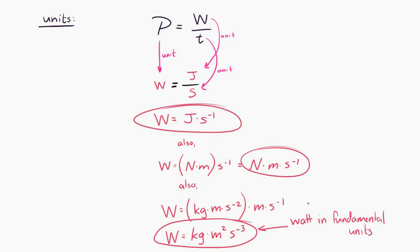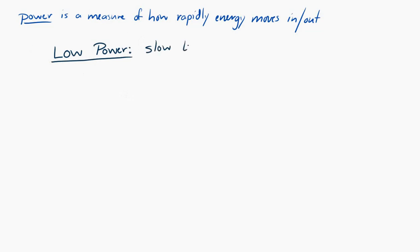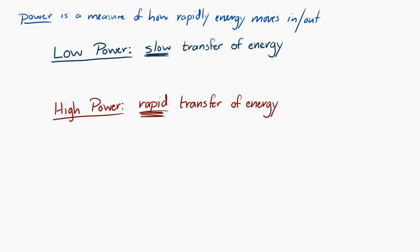Normally though, we'll just write out watt. So I said that power is a measurement of how rapidly energy moves. So if something has a low power, if the power is low in a situation, that means we are slowly transferring energy somehow. If the power is high, that means we are rapidly transferring energy. The energy is moving very quickly from one place to another.